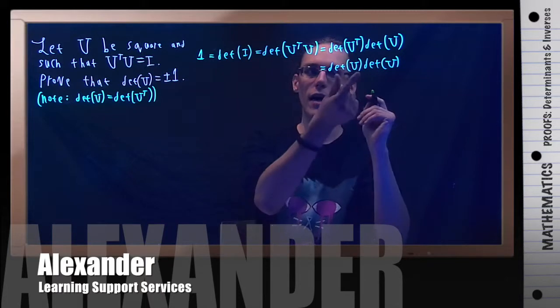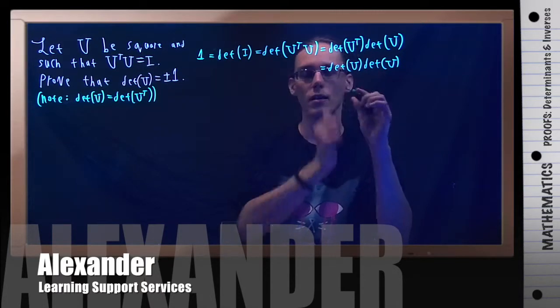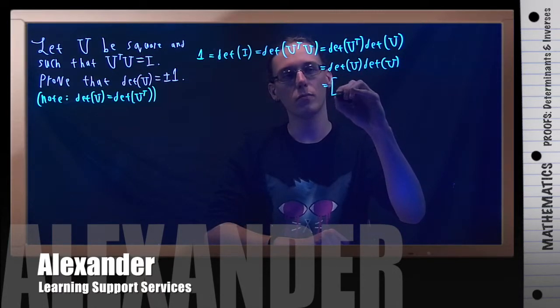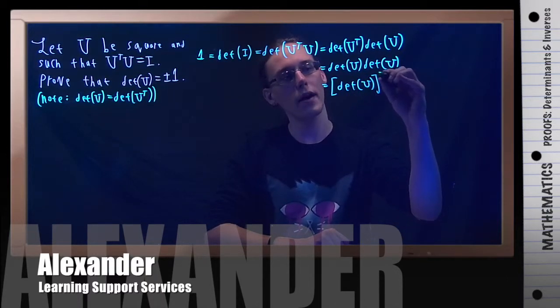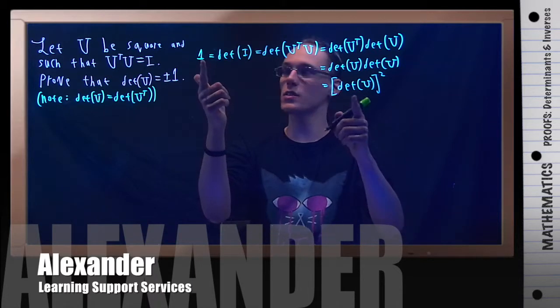What does that mean if I have something times itself? That must be the determinant of U squared. Remember, this equals 1.